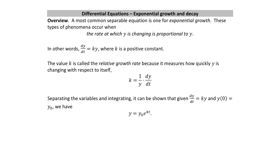One of our most common separable equations is the one for exponential growth. Here's how you recognize it: the rate at which y is changing is proportional to y itself. For example, the rate at which your bank account balance increases is proportional to the balance — the more money you have, the more interest you get. The rate, that's the derivative, is proportional to means it's some constant multiple of y.